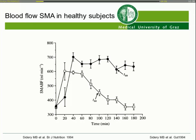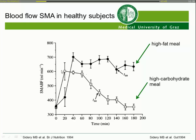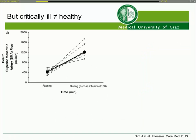We have changes in blood flow when we eat or feed somebody. This study in healthy volunteers shows that the increase of blood flow depends on the formula given. With a high carbohydrate meal there is a short peak that goes down very fast, whereas with a high fat meal the increase is much more pronounced and much more prolonged. The same data were shown in the publication by SIM.